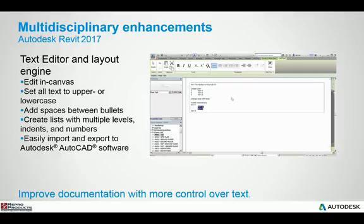The text editor has been improved in Revit 2017 to be a little bit cleaner and simpler to use. They've introduced tabbing, bulleting, and numbering, along with an overall slightly better functionality than the previous text editor tool.